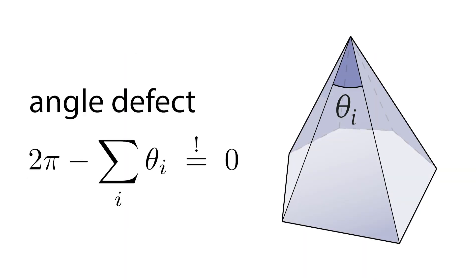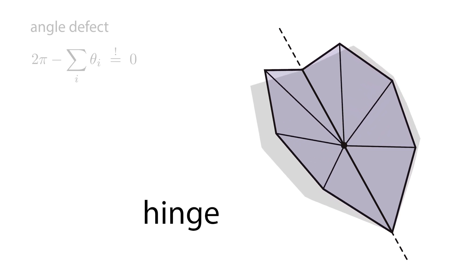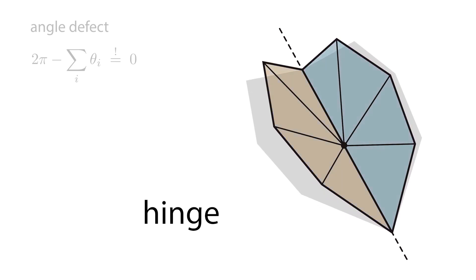Instead of merely asking each vertex to be flattenable, which is accomplished by requiring the traditional angle defect to be zero, our new definition for discrete developability requires every vertex star to form a hinge: two flat pieces separated by a straight line.